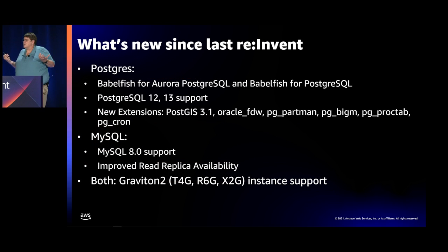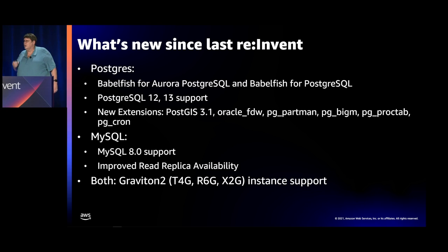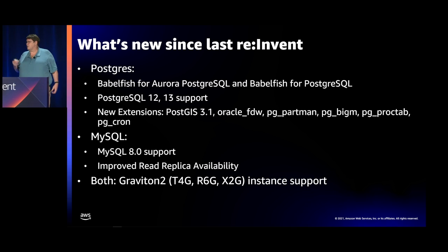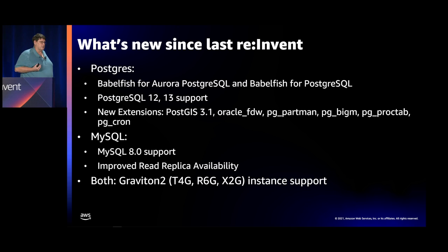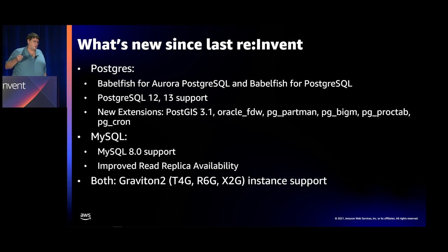What's happened since the last re:Invent? On the Postgres side, we've kicked off Babelfish for Postgres as well as Babelfish for Aurora — I'll explain the difference a little bit later. We also launched Postgres 12 and Postgres 13 this last year, a number of extensions including a big update for PostGIS. On the MySQL side, we launched MySQL 8.0 a couple weeks ago, plus improved read replica availability and Graviton instance support for both flavors.